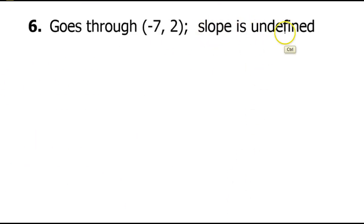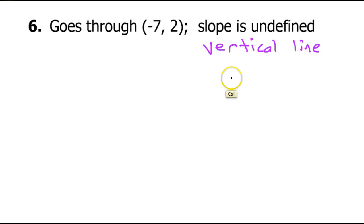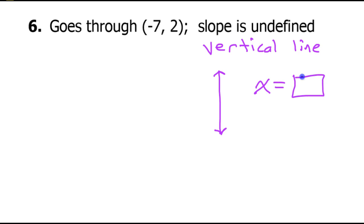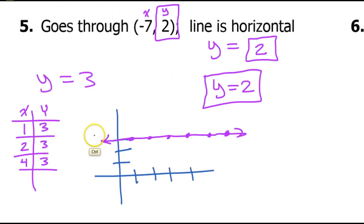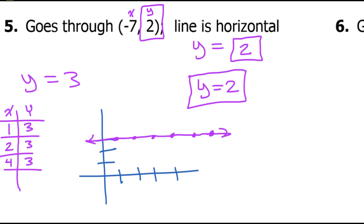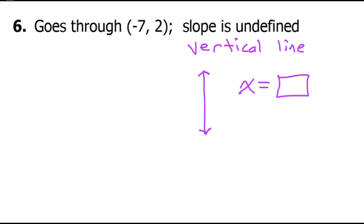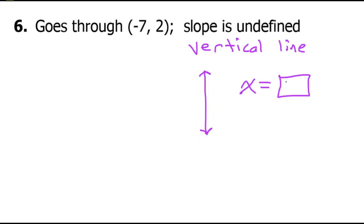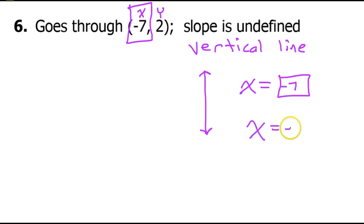The slope is undefined. When the slope is undefined, that means you're talking about a vertical line. A vertical line has no slope. When you are talking about a vertical line, you're talking about a line where all of the x values equal some number. Remember, when we had a horizontal line, all the y values were the same, so we had y equals something. When you have a vertical line, all the x values are the same, so it's going to be x equals something. The x values will all be negative 7, because if one x value is negative 7, then they all have to be negative 7. So the equation will simply be x equals negative 7.